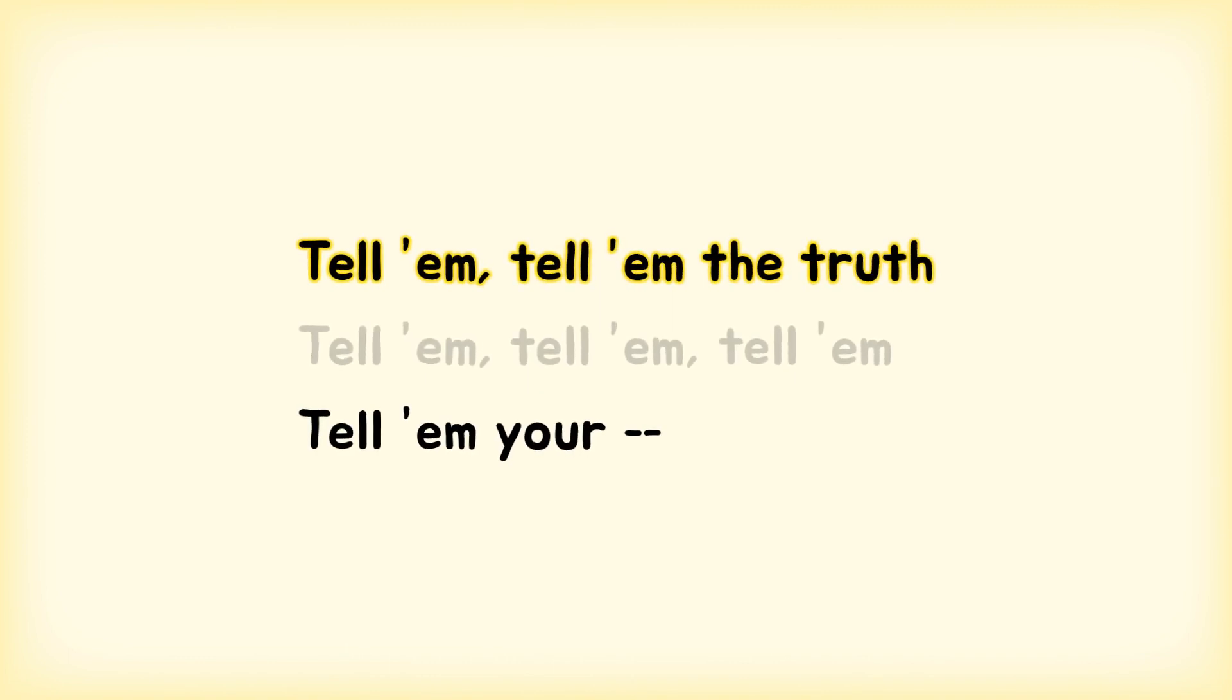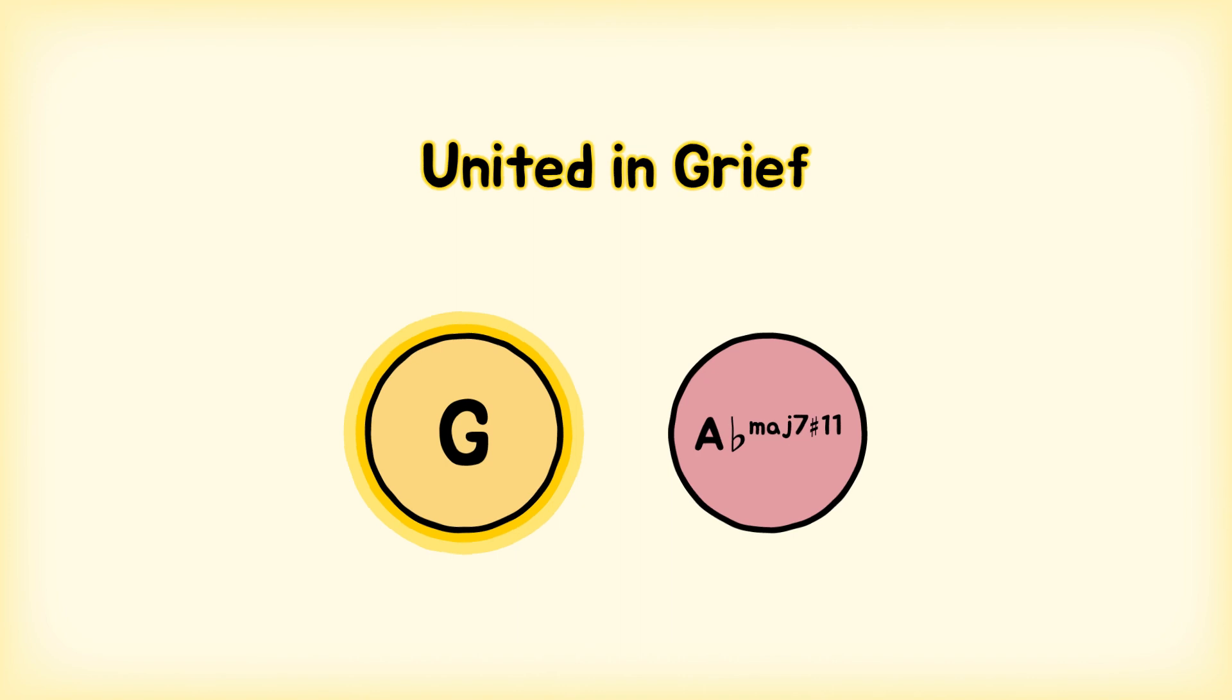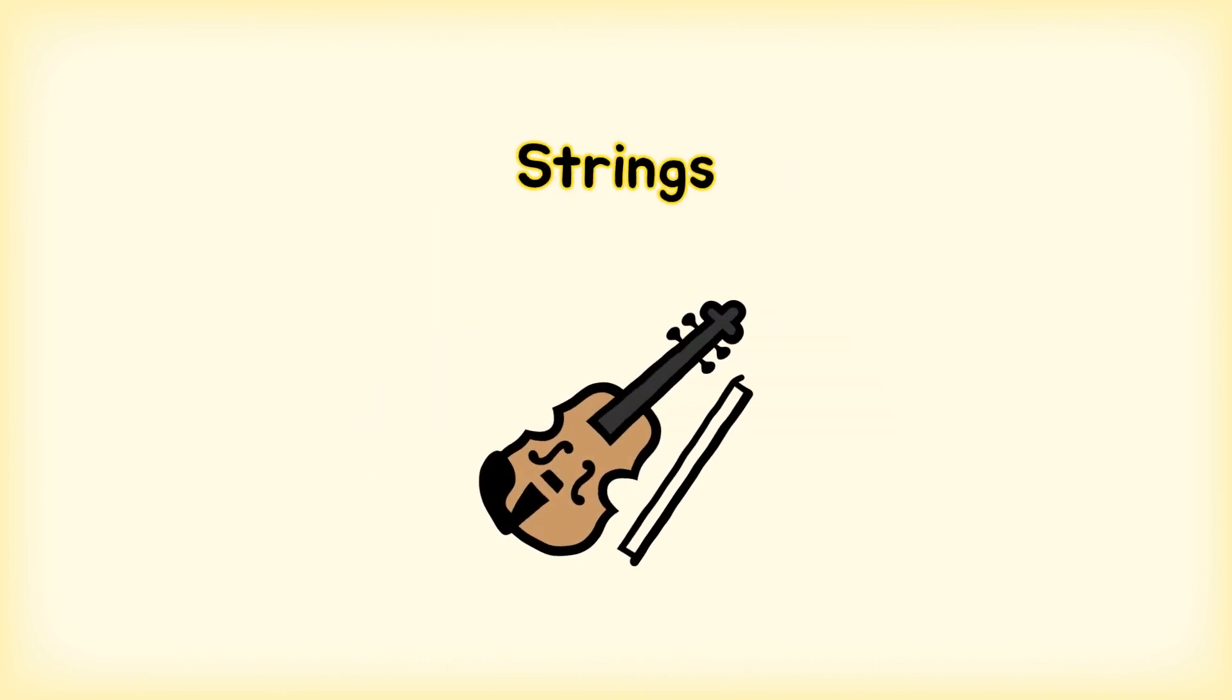Number 2. Near the start of United in Grief, tap dancing and Whitney's urging to tell the truth give way to a piano. We hear two major chords a semitone apart, a progression that's reminiscent of Radiohead circa 2000. So are a few other flourishes: the burbling synth, the reverse snare, and the strings sliding out of tune.